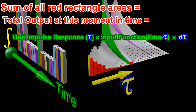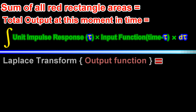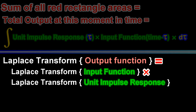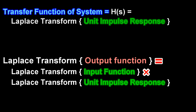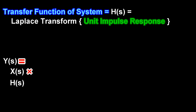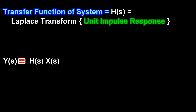The output function can also instead be computed by making use of the Laplace transform. The Laplace transform of the unit impulse response is what we refer to as the transfer function of the system. The transfer function is very useful in studying the frequency response and stability of a system.